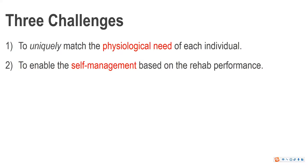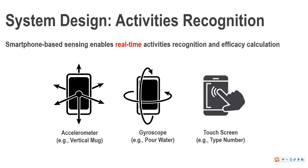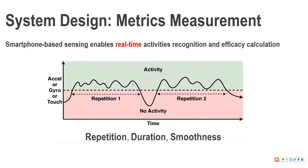The second challenge is to enable self-management based on rehab performance. For this challenge, we leverage smartphone-based sensing to enable real-time activity recognition and rehab efficacy calculation. For example, we leverage the accelerometer to measure if an axis involves translational motion, or the gyroscope if it involves rotational movement. For each axis, we adopt a threshold-based algorithm to calculate the efficacy of rehabilitation, including number of repetitions, duration, and smoothness.